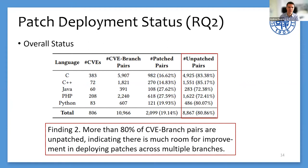In the next part, we measure the patch deployment status on all affected stable branches. During dataset construction, we labeled all affected stable branches and the security patches on them. Thus, we can determine whether a CVE is patched on a branch for each CVE-branch pair. The overall results are shown in the table. We observe that the proportion of unpatched CVE-branch pairs is high regardless of the programming language — more than 80% of CVE-branch pairs are unpatched.